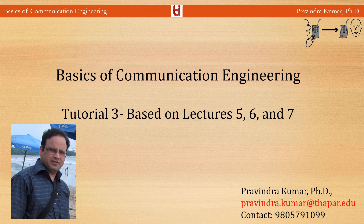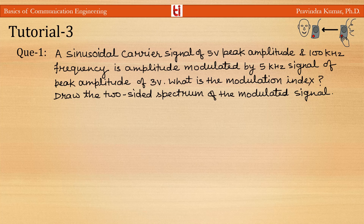Welcome to the lecture series on basics of communication engineering. This is Tutorial 3, based on lectures 5, 6, and 7. Question 1: A sinusoidal carrier signal of 5 volt peak amplitude and 100 kilohertz frequency is amplitude modulated by a 5 kilohertz signal of peak amplitude 3 volt. What is the modulation index and draw the two-sideband spectrum of the modulated signal? The carrier has peak amplitude 5 volt and frequency 100 kilohertz.